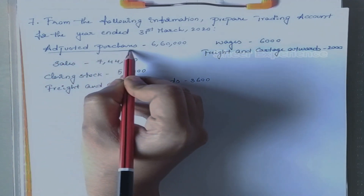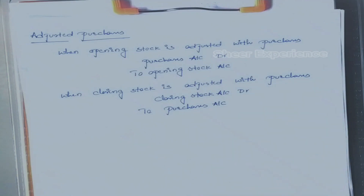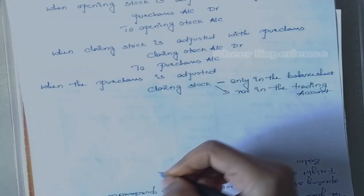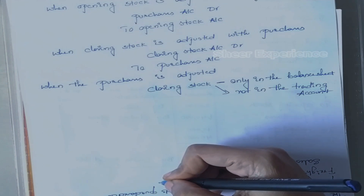First we will see what adjusted purchases means. In some companies they do closing entries for purchases at the end of the month. When opening stock is adjusted with purchases the entry is: purchase account debit to opening stock account. When closing stock is adjusted with purchases the entry is: closing stock account debit to purchase account. These are the adjustment entries for purchases. Whenever we see adjusted purchases in a problem, we should not mention the closing stock in the trading account — we will mention it in the balance sheet.